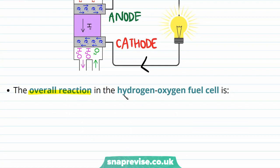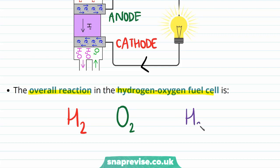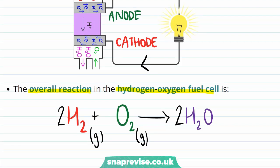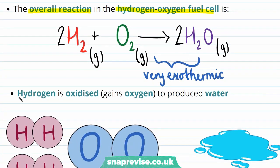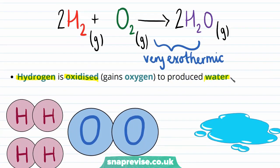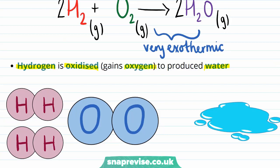We can write an equation for the overall reaction in the hydrogen-oxygen fuel cell. We react hydrogen (H₂, a diatomic molecule) with oxygen (O₂, also diatomic) to produce water (H₂O). Balancing gives: 2H₂ + O₂ → 2H₂O. Hydrogen, oxygen, and water are all gases in this fuel cell — we produce water vapour because the reaction is very exothermic, producing enough heat to boil the water. Hydrogen is being oxidised as it gains oxygen, so we can describe the overall reaction as an oxidation process.